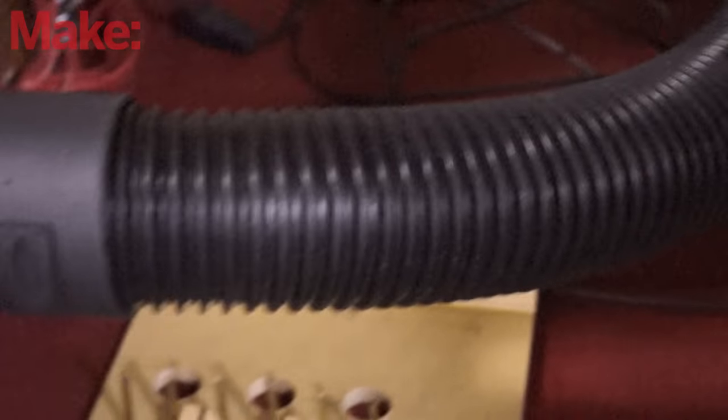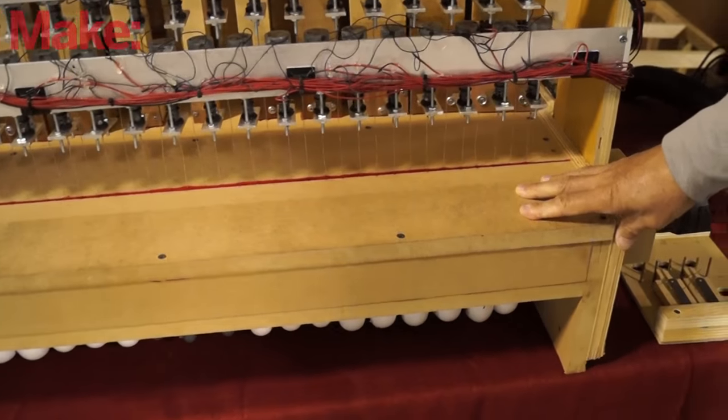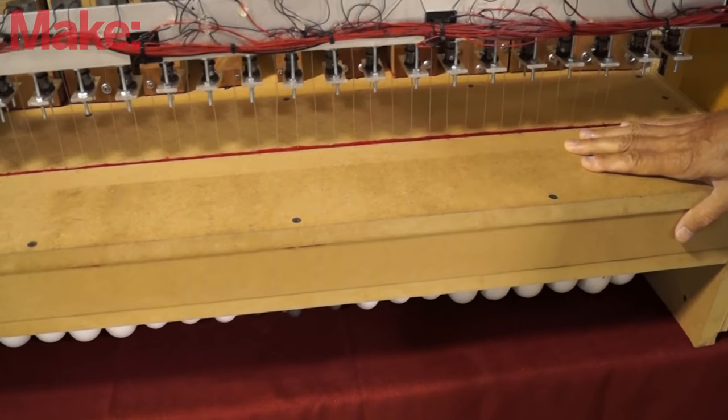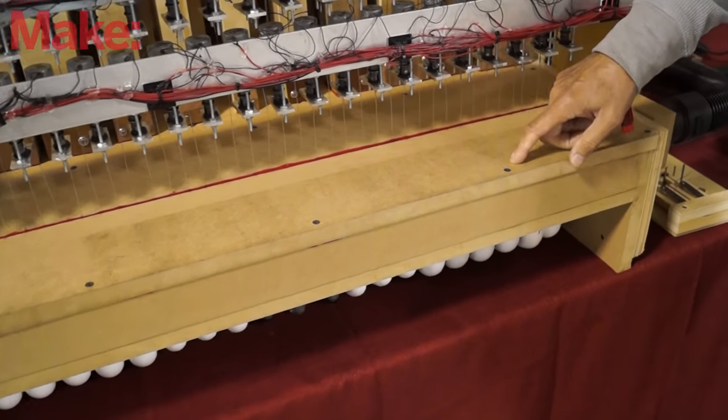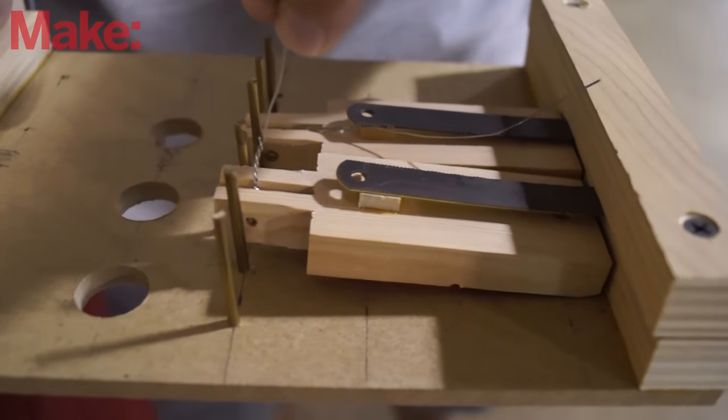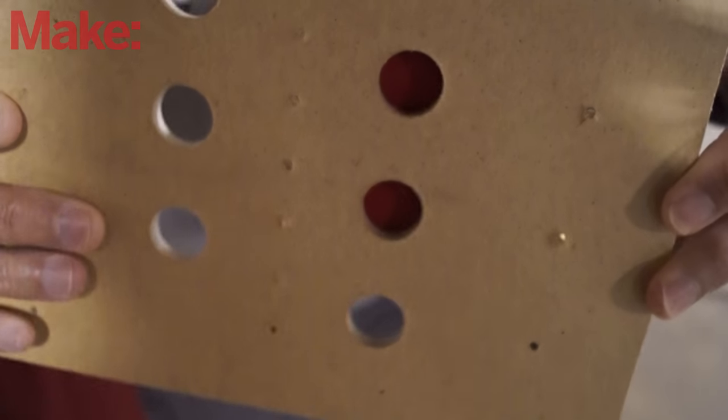And then the air pressure from that device feeds a sealed box that's referred to in the organ business as a wind chest. The wind chest has, in the bottom of it, valves. And when those valves open, air passes from the wind chest into the pipes and the pipes speak.